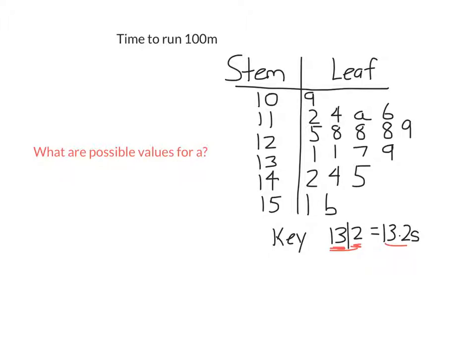So A has to be between 11.4 and 11.6. So A could be 5. It could also be 4 or 6. So they are the possibilities for A. It could be 4, 5 or 6.